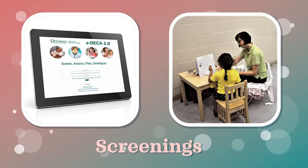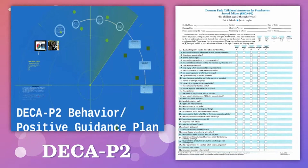The two screenings used when a child starts each year are the DIAL-4 and the DECA P2. The DECA P2 is the social-emotional screening that provides information about children's initiative, self-regulation, attachment relationship, total protective factors, and behavior concerns. Parents complete the screening during enrollment, orientation, or their first home visit. The teacher version is entered after the teacher has observed the child in the classroom for four weeks, but both assessments must be entered within 35 days of their first day of class.